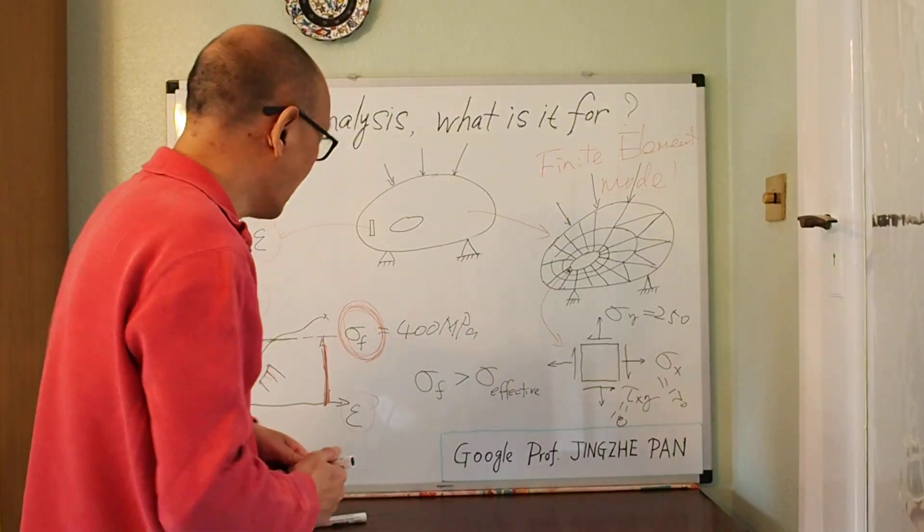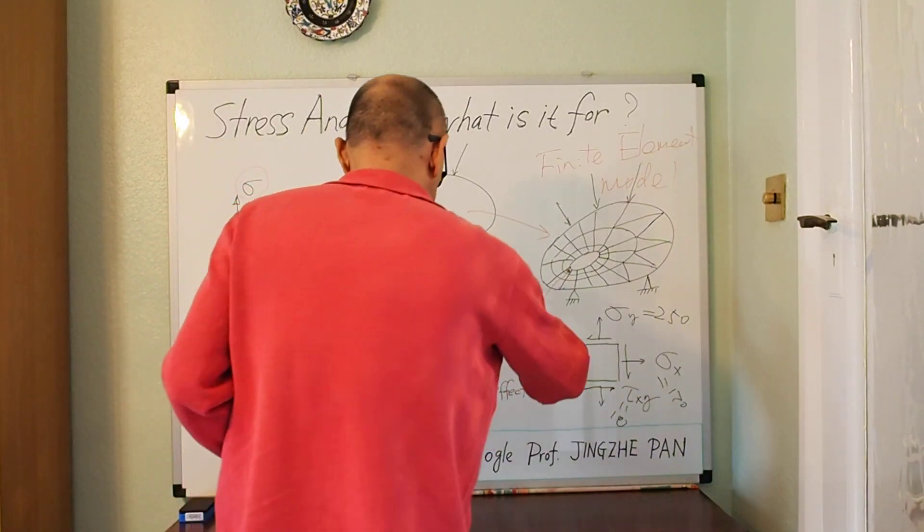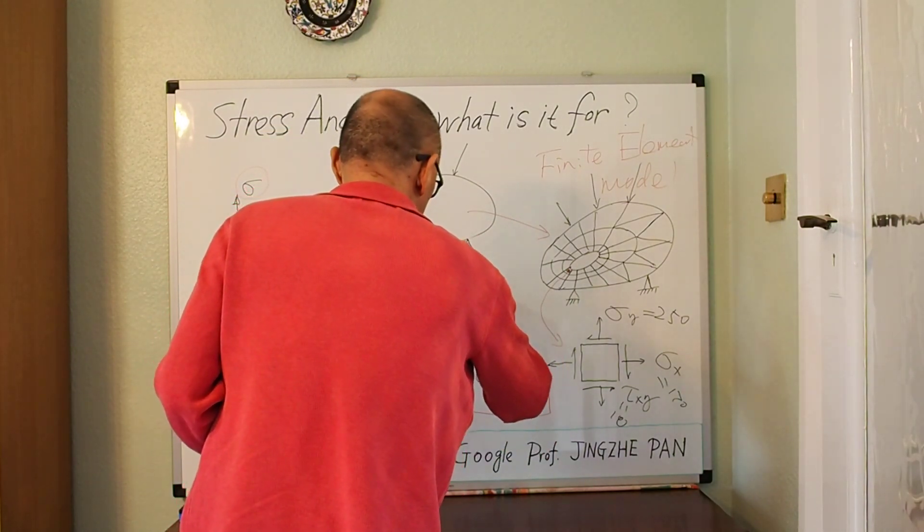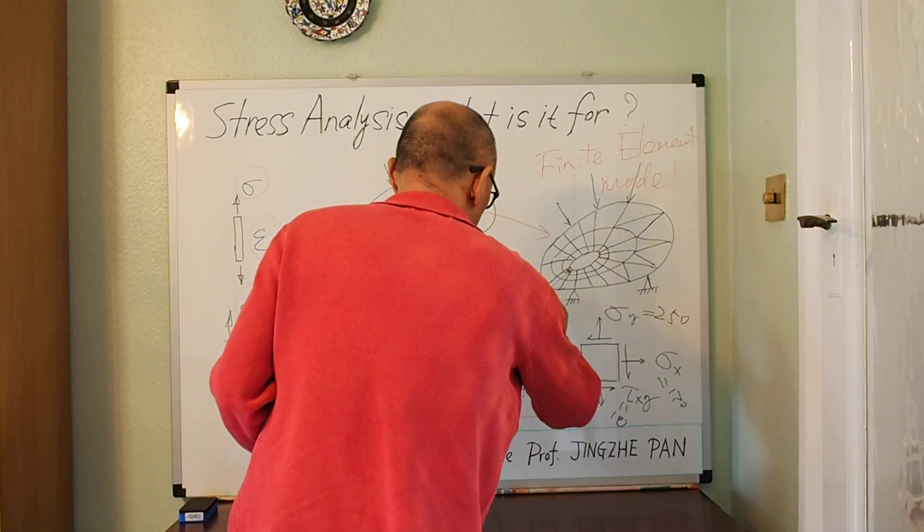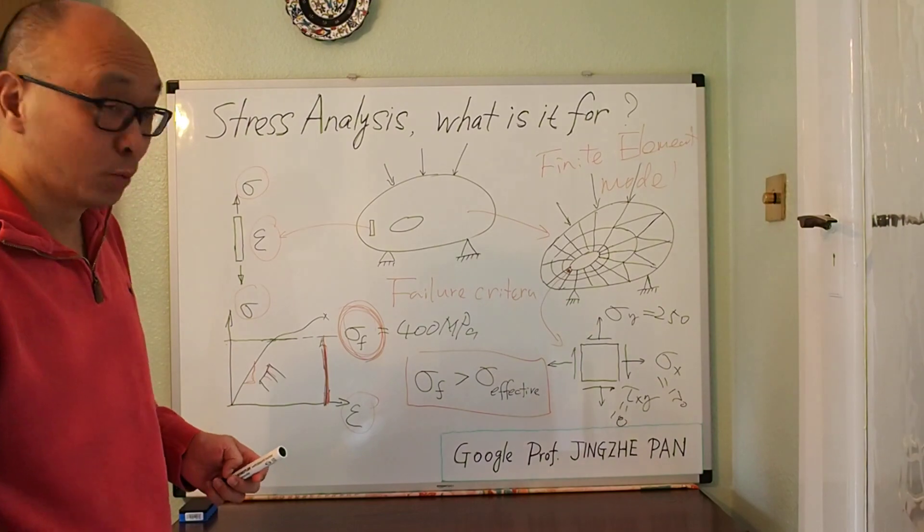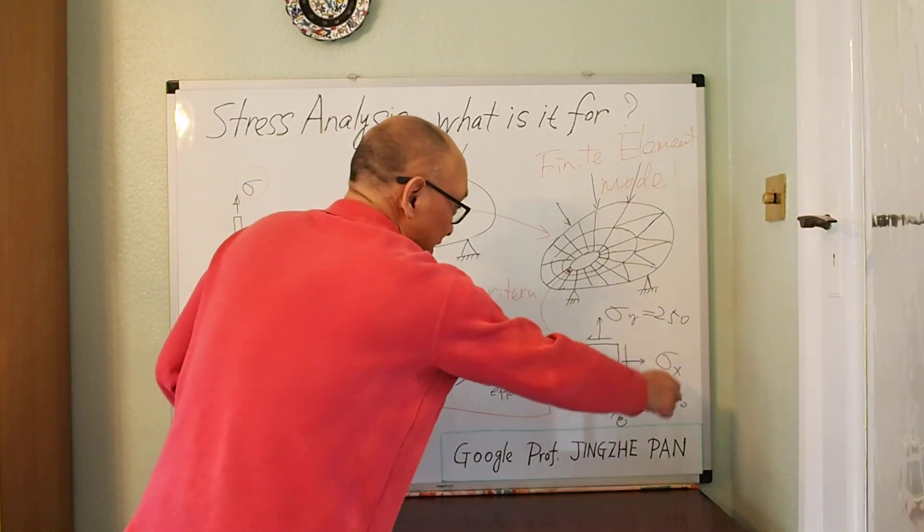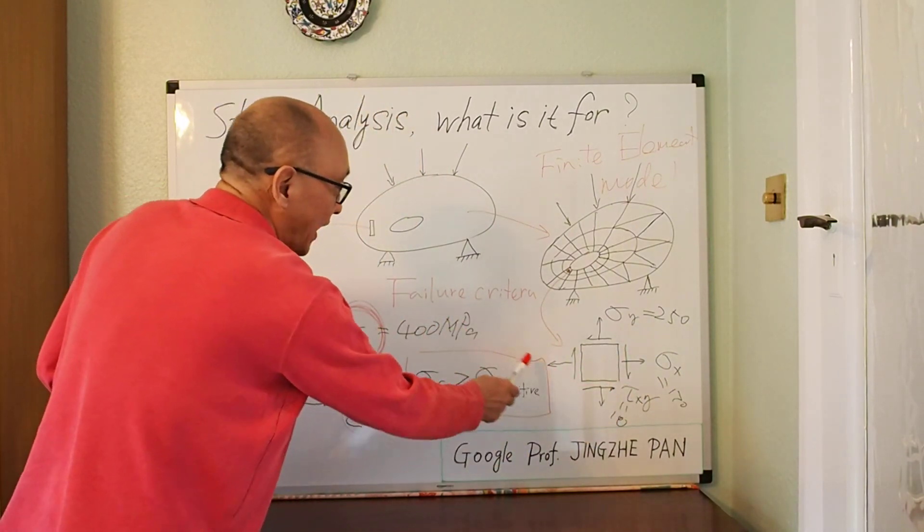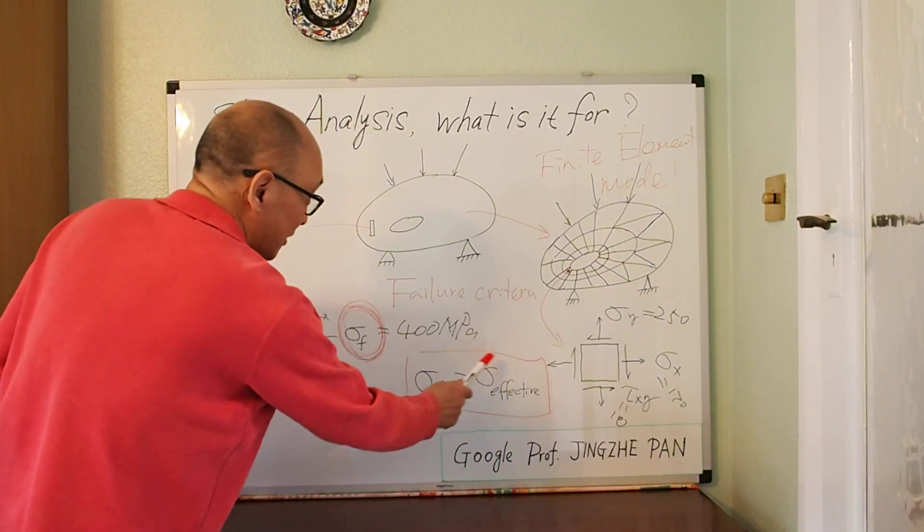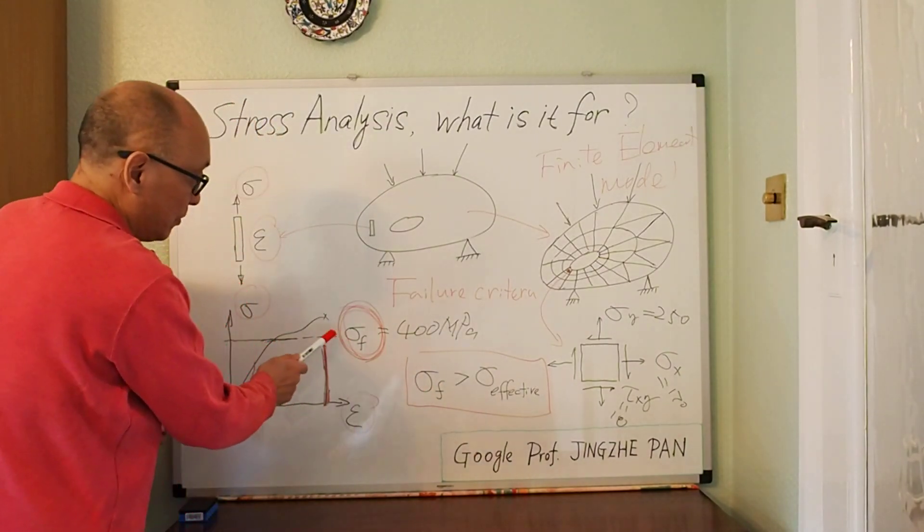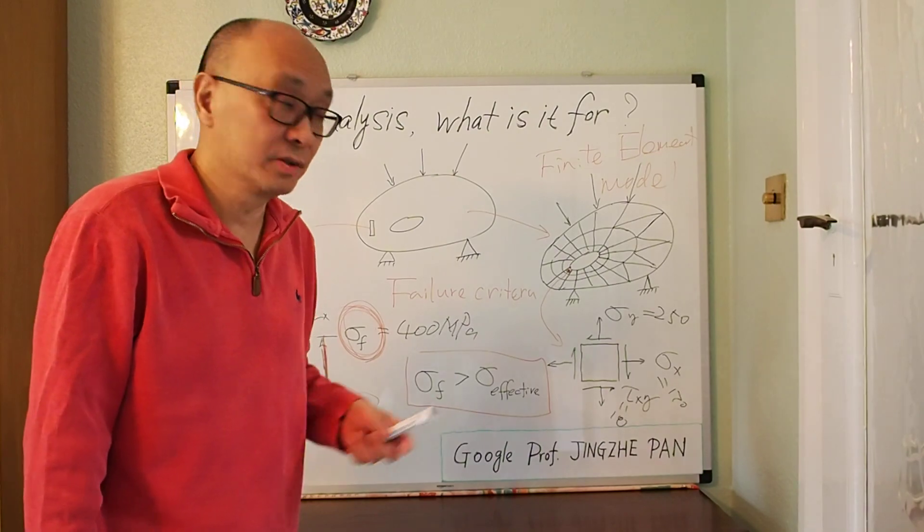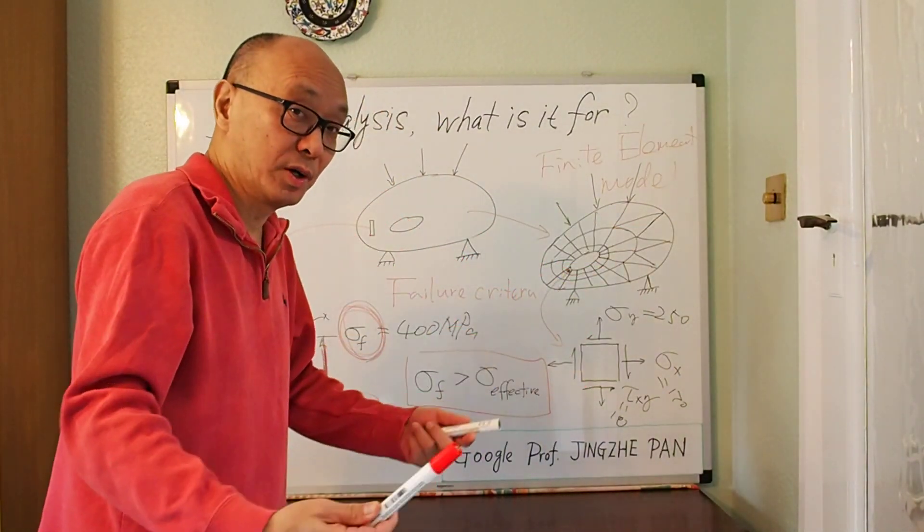How do I compare this set of stresses with that value? And that is the area what we call failure criteria. So you need a failure criteria to make that judgment. And what you do is, in practice, you lump this set of stresses into a single effective stress. You lump this together into a single effective stress. And make sure that that effective stress, if that effective stress is less than this value, then you'll be safe. If it's larger than that, the material will break. And you can do that for all the points, to ensure your design is safe.